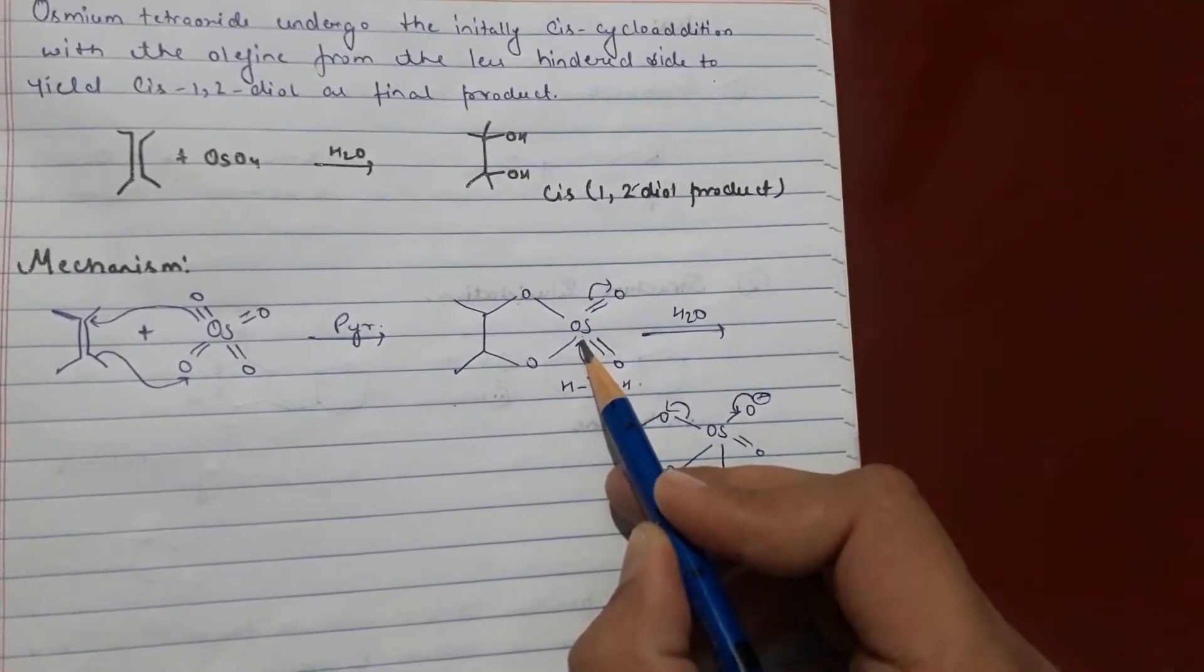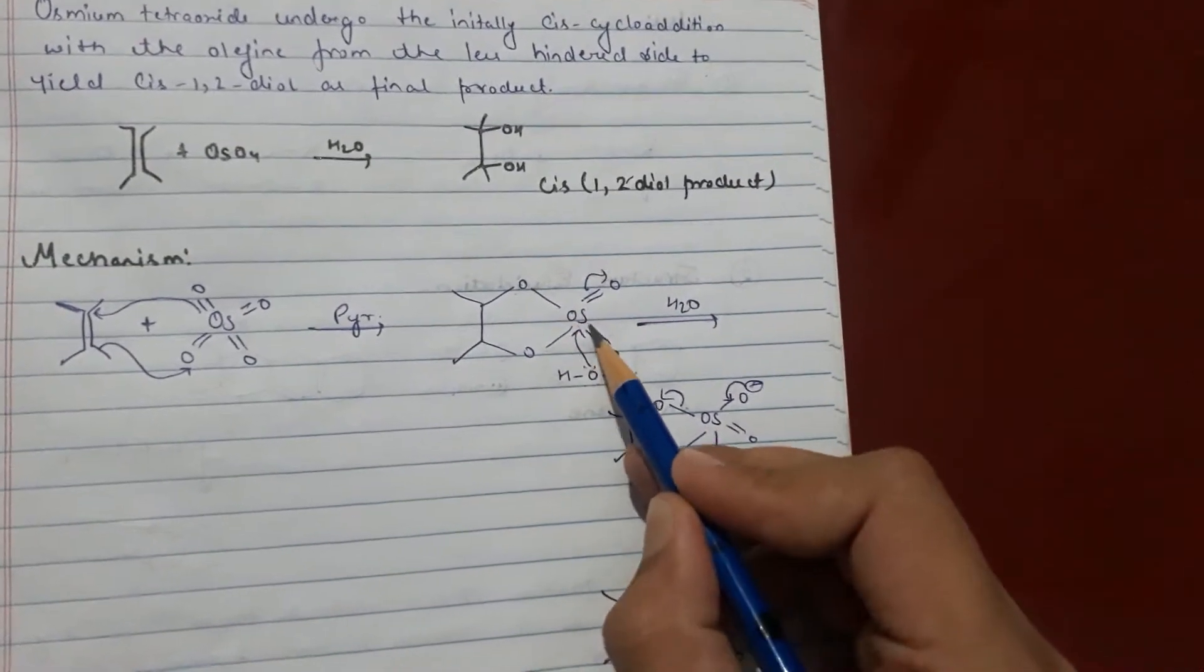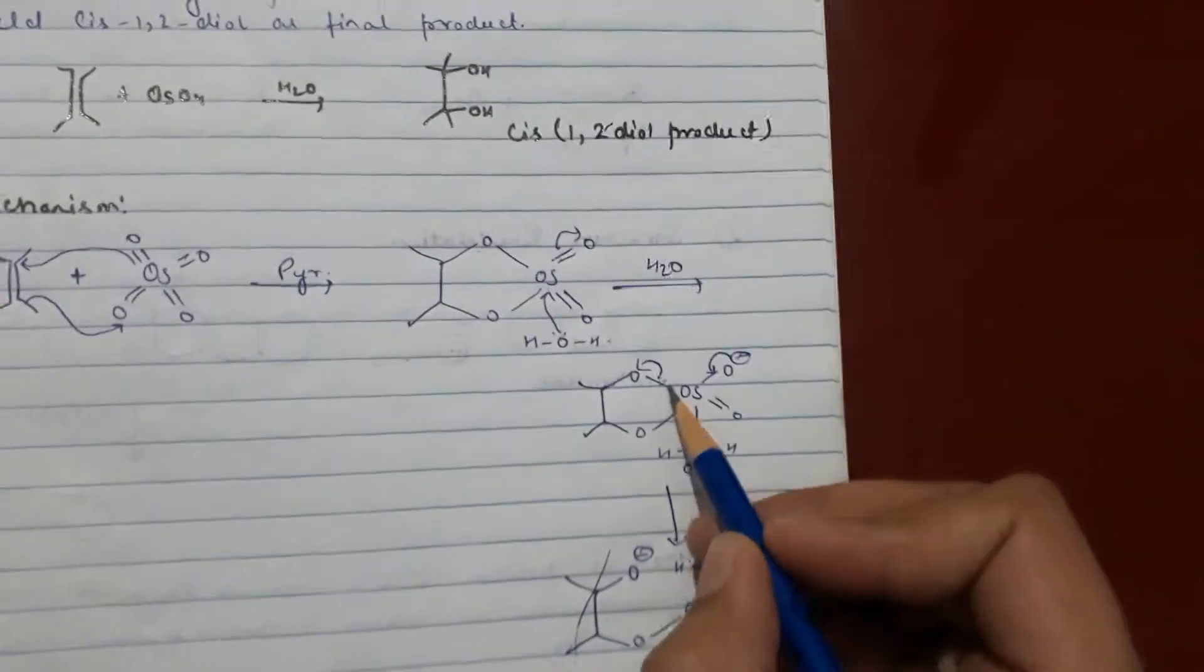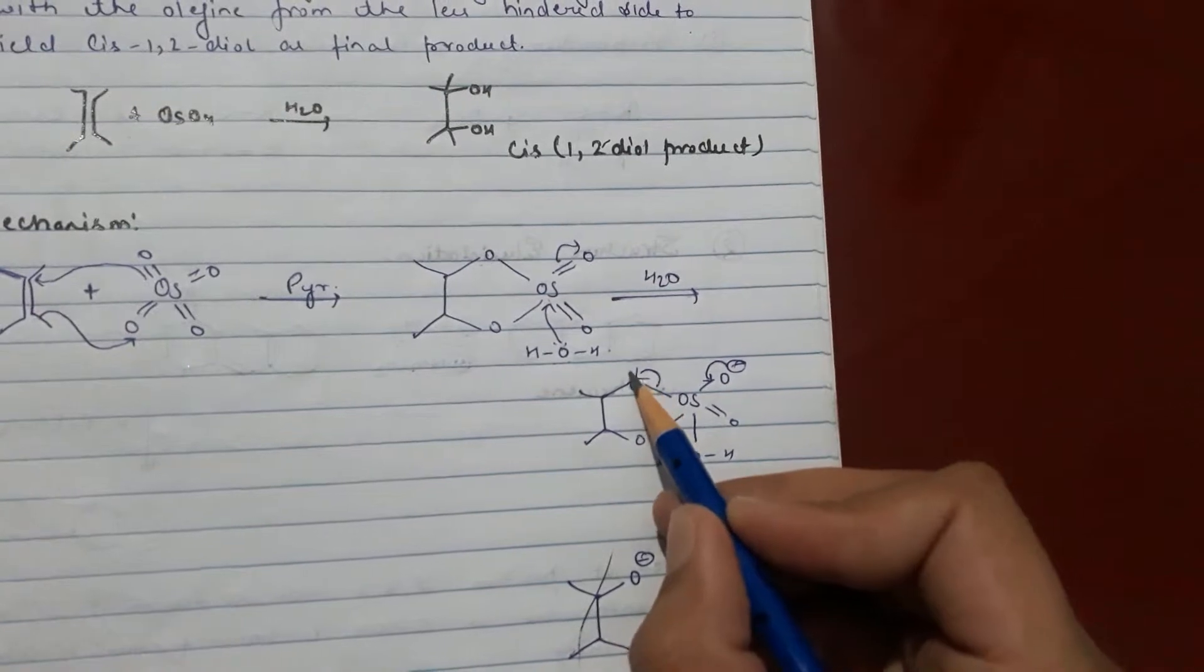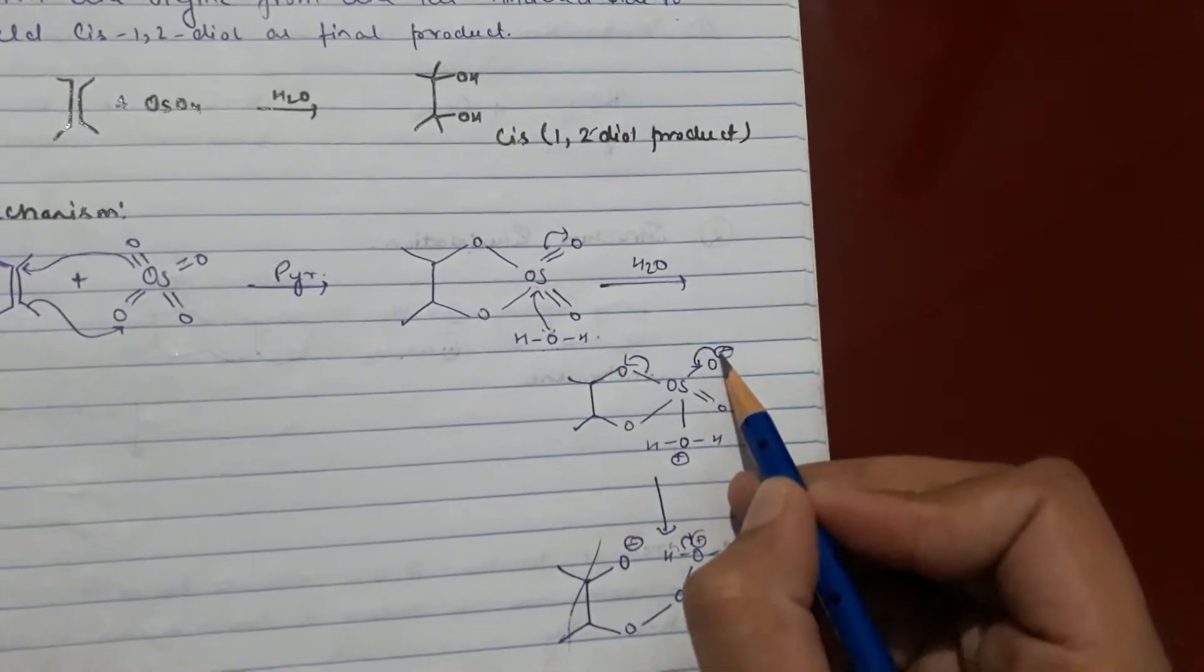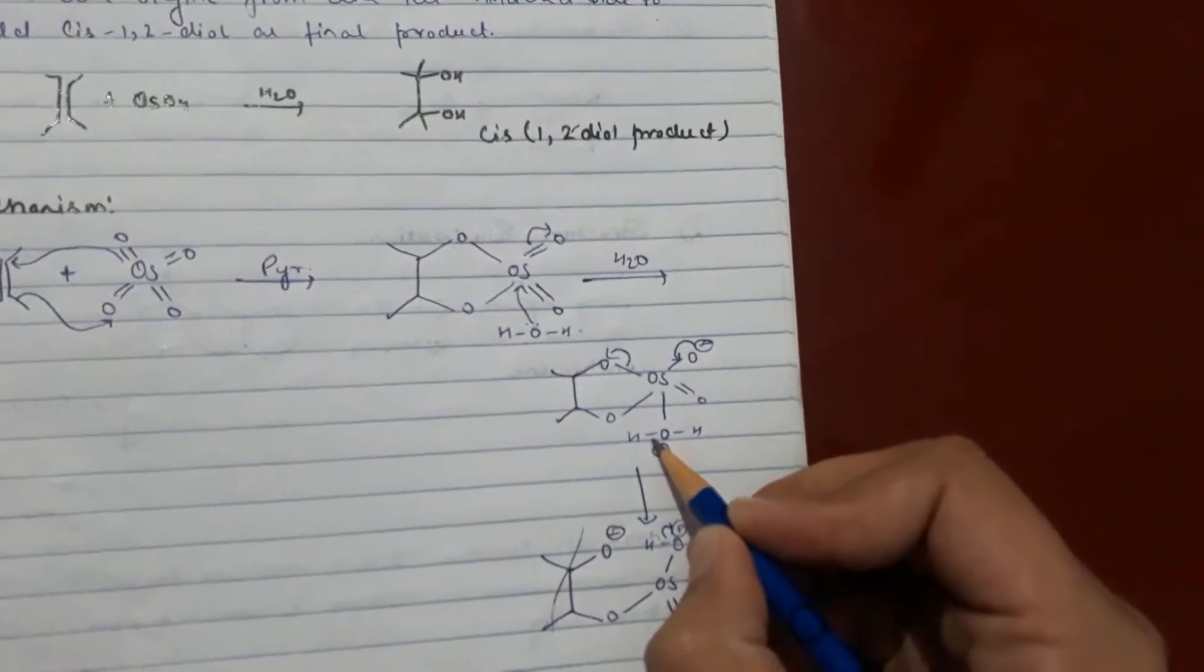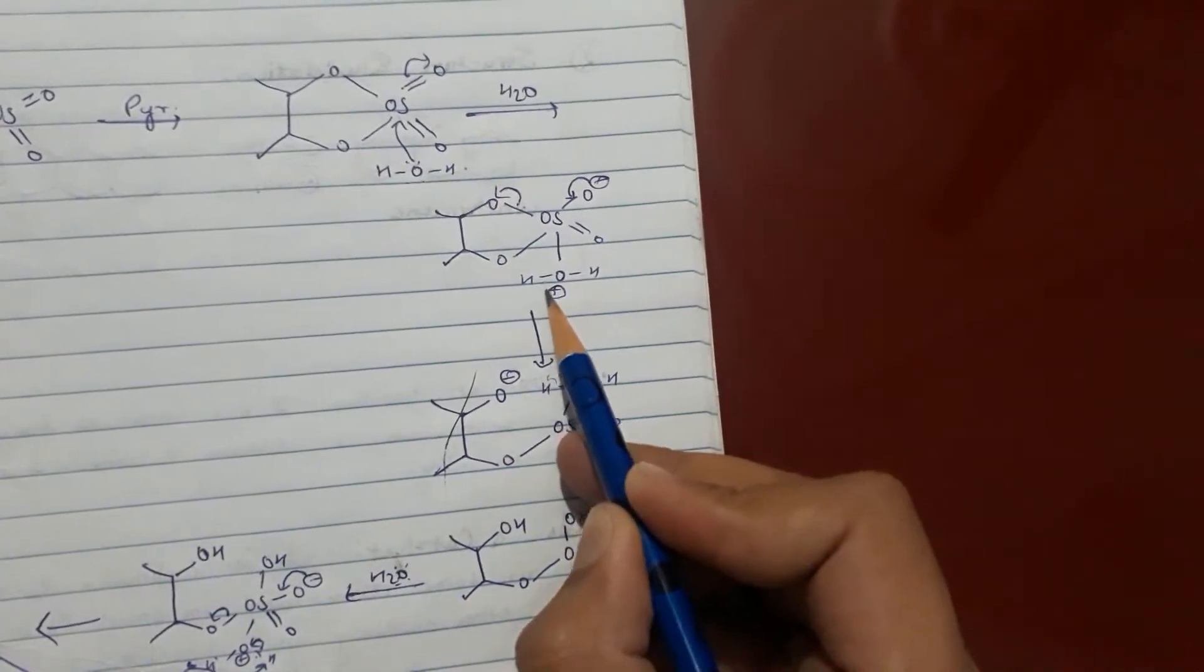H2O will attack on that side of Osmium because there is a presence of 6 double bond of Osmium. Now this O2O. H2O will shift here and this H2O will shift here.